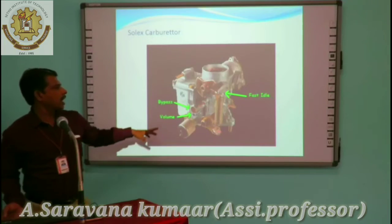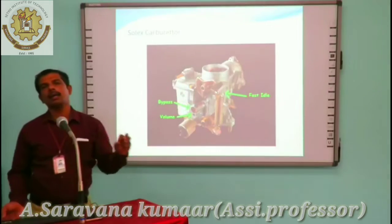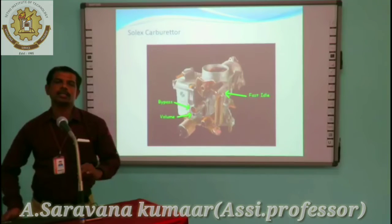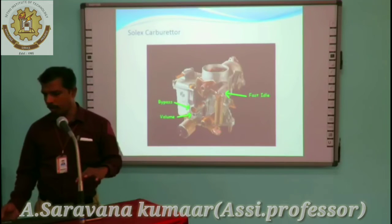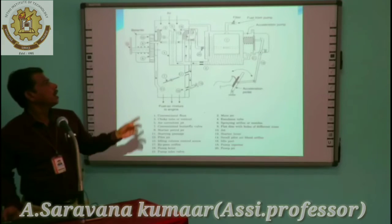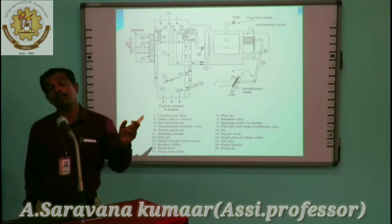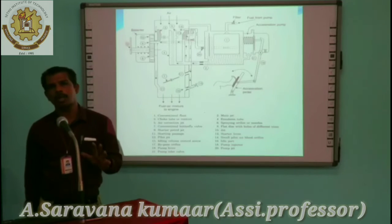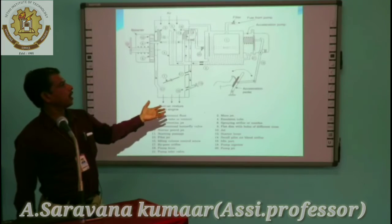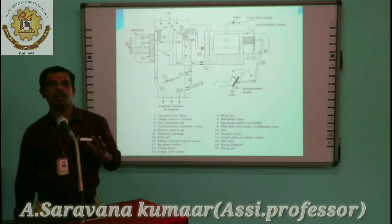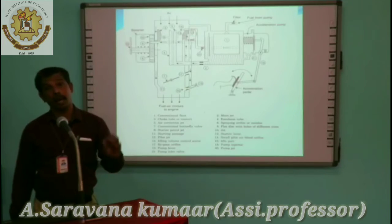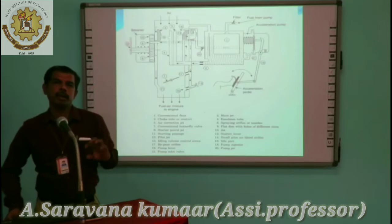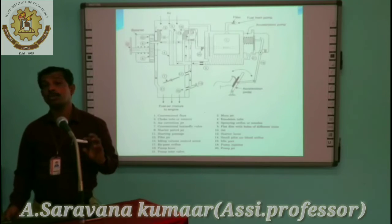Here is a Solex carburetor. It has lots of arrangements — not like the simple carburetor. It has an individual idling circuit, individual acceleration circuit, and minimum air-fuel mixture circuit. Every circuit operates individually, whatever the speed and load. In contrast, the simple carburetor is only good for constant RPM. The Solex carburetor handles all types of loads and speeds. If high speed is needed, it gives high fuel. If there is high load, it gives high fuel. It understands the problem of the vehicle and supplies the correct air-fuel mixture.